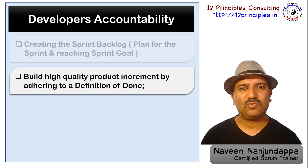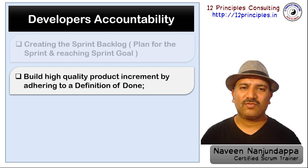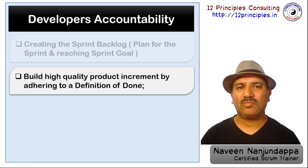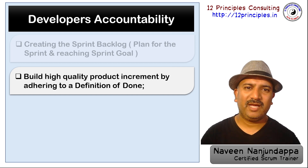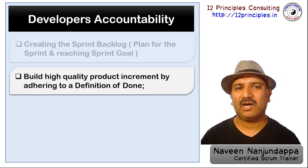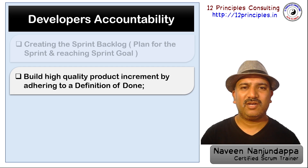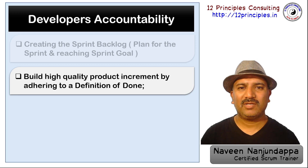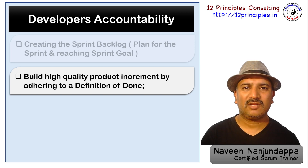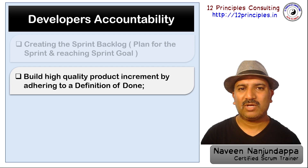The team members are focused towards building a high quality product increment by adhering to the definition of done. The definition of done evolves over a period of time and becomes more stringent, and hence the quality of the product also becomes much higher over time. It is important that everybody adheres to the definition of done and focuses towards building a product increment that meets the done criteria, rather than adding the number of functionalities without having the done criteria met.